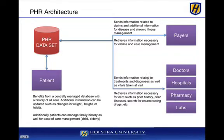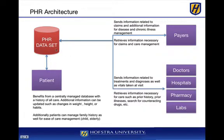Doctors, hospitals, pharmacies, and labs will send information related to treatment, diagnosis, and vitals taken at a visit — things you might want to trend, such as cholesterol readings, blood pressure readings, weight, and height. They can also retrieve information necessary for care, such as prior history, prior illnesses, or even counteracting drugs. As the patient, I'm the one who benefits from having this entire data set. So long as I can control it, I can control who has access, which you are able to do with things like Microsoft Health Vault.